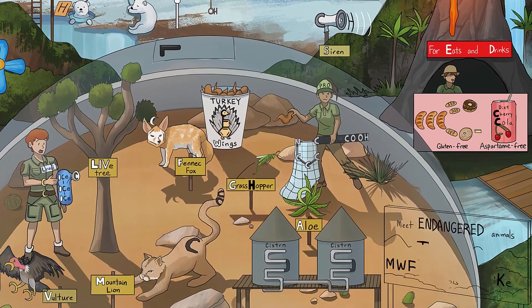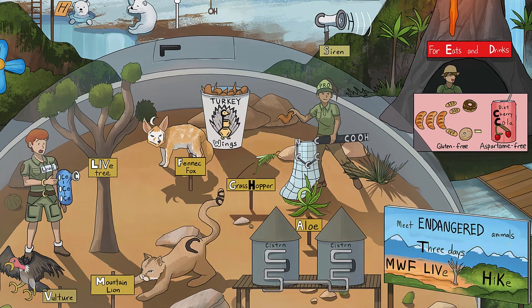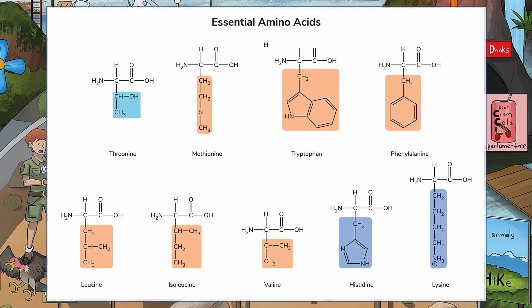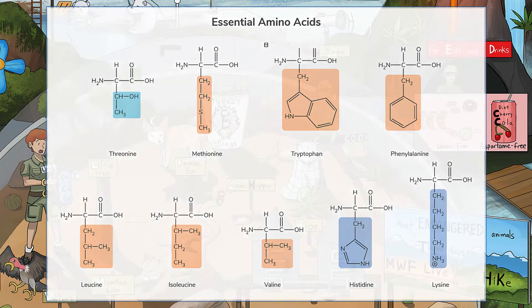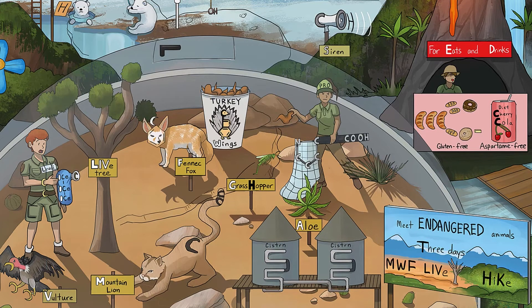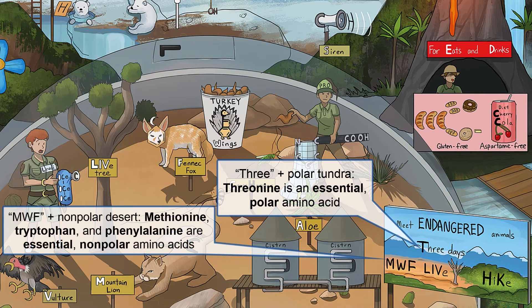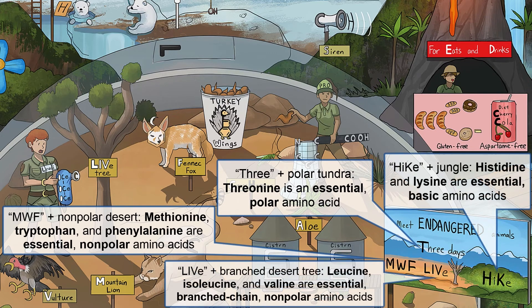Let's switch gears and talk about the nine essential amino acids that cannot be synthesized by the body. The Amino Animal Zoo allows visitors to meet endangered animals — and the endangered animals are essential to existence. The essential amino acids are threonine, methionine, tryptophan, phenylalanine, leucine, isoleucine, valine, histidine, and lysine. Check out this mnemonic to help you remember them: for three whole blissful days, specifically Mondays, Wednesdays, and Fridays, go on a live hike to meet these endangered beauties.